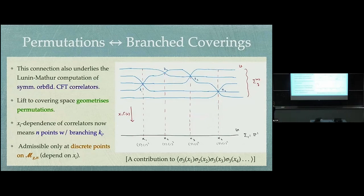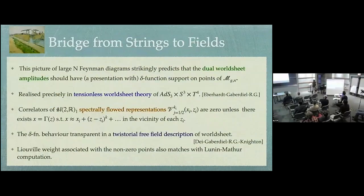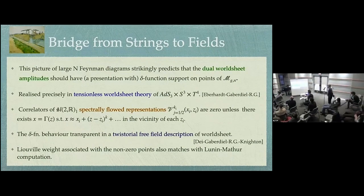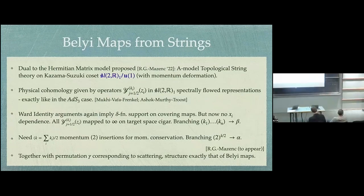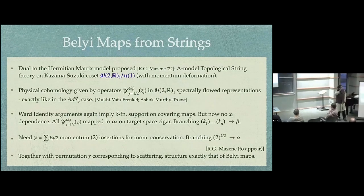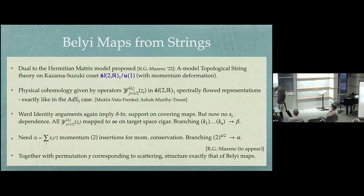Question: This topological theory on the level-one cigar has an SU(2) symmetry. Is there a manifestation of this SU(2) symmetry in the matrix model? Answer: There is this whole W-infinity symmetry — the SU(2) is a part of the larger W-infinity symmetry. The matrix model has Virasoro constraints and W-infinity constraints, in particular at the self-dual point. That's the highest spin part, the analog of the enhanced higher spin symmetry that is there at this free point.